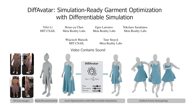We present DiffAvatar: Simulation Ready Garment Optimization with Differentiable Simulation — a method for automatically generating simulation-ready assets from a multi-view capture setup. We use an optimization-based pipeline that utilizes a differentiable dynamic simulation model to recover body shape and pose, garment pattern, and cloth material.